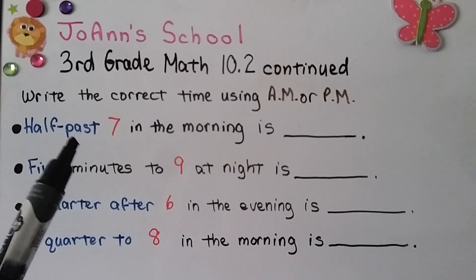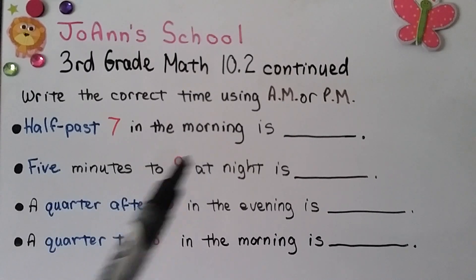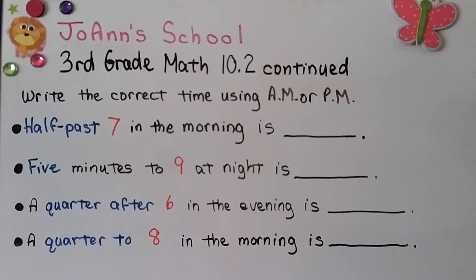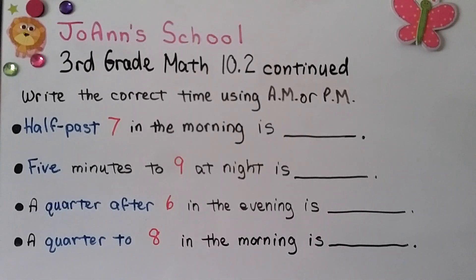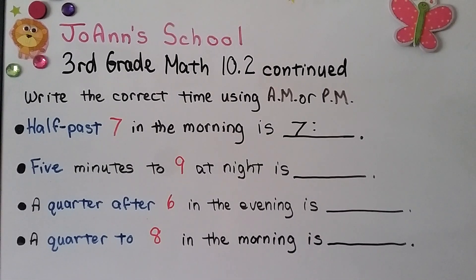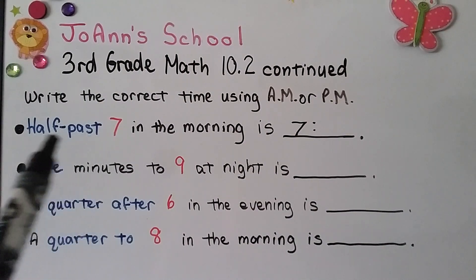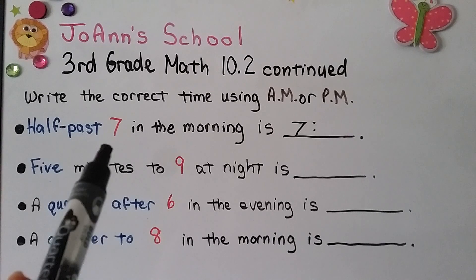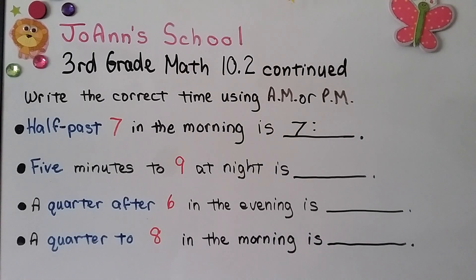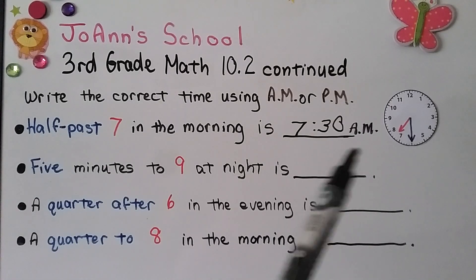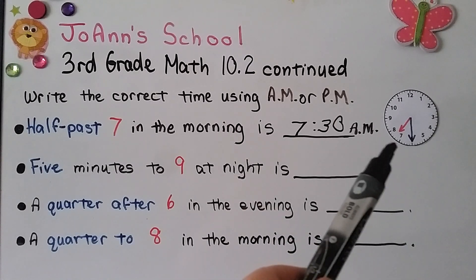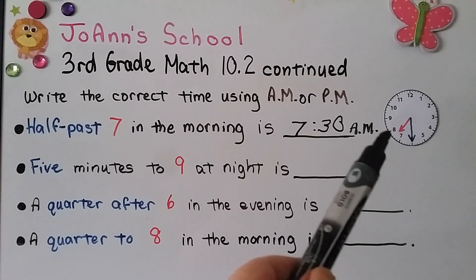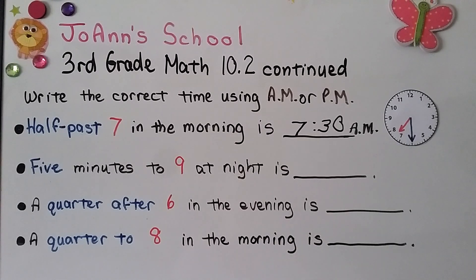We need to write the correct time using A.M. or P.M. It says half past seven in the morning. The hour would be seven, and half past means halfway around the clock — that's 30 minutes. So that's 7:30 A.M. because it's morning. Our analog clock would show the hour hand between the seven and eight, and the minute hand pointing to the six.